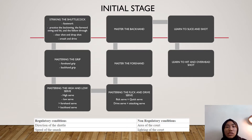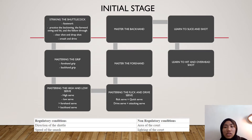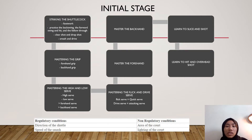Here are a few examples in badminton at the initial stage. These include striking the shuttlecock using footwork, mastering the grip, mastering the high and low serve, mastering the backhand, mastering the forehand, mastering the flick and drive serve, learning how to slice and drop shot, and learning how to hit an overhead shot.